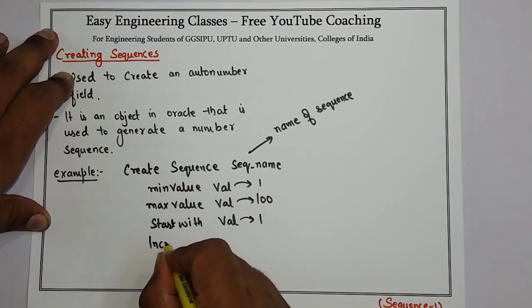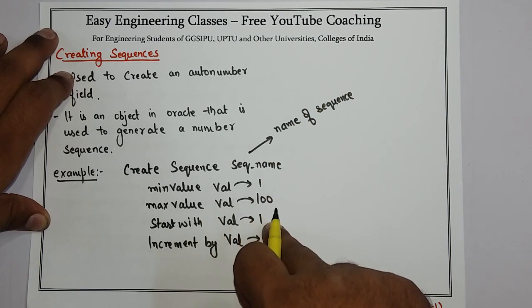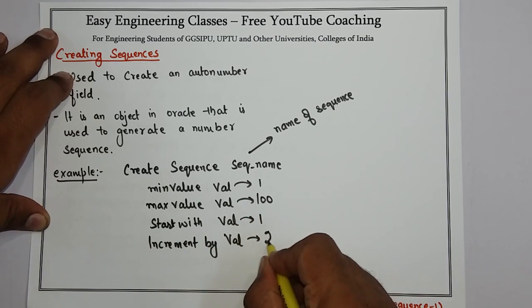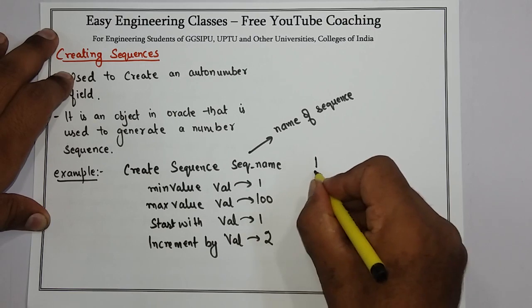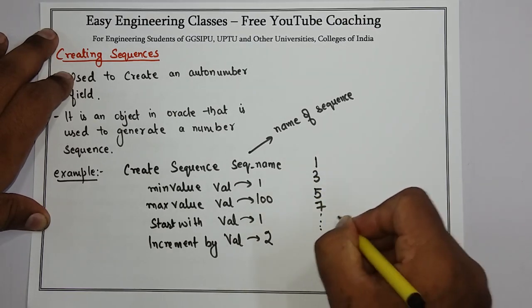Then increment by. Increment by means every time a new record is inserted, the new sequence will be incremented by the value specified here. For example if I give two, initially the sequence is one. Next time the sequence will be three, five, seven and so on.